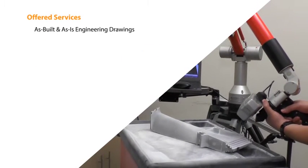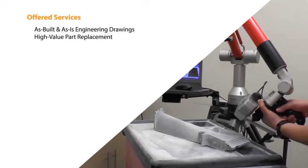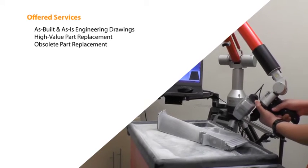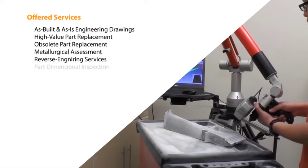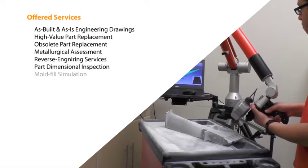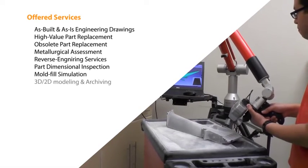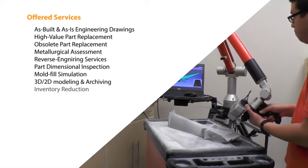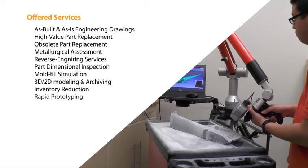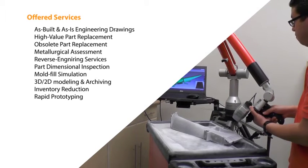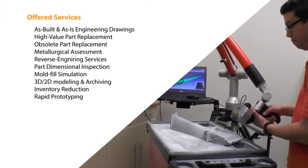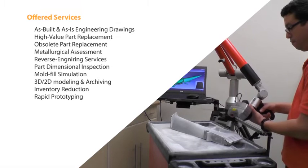Once the computer-aided design file is ready, we can reproduce it using multiple manufacturing processes. Some of those include obsolete part replacement, high-value part replacement, and rapid prototyping.